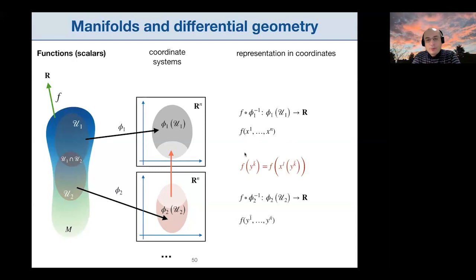We pass from one representation to the other using the coordinate transformation map, which gives us x^l as a function of y^l coordinates. So f(y^k) is the same as f(x^l(y^k)). This is something you've been doing throughout your undergraduate physics course — it's just written in a slightly different notation.